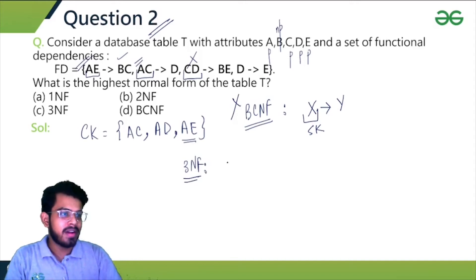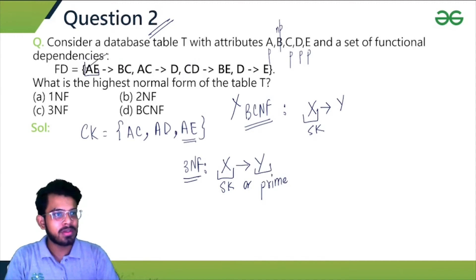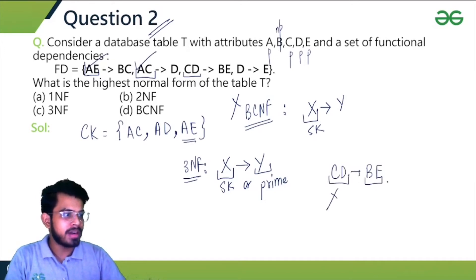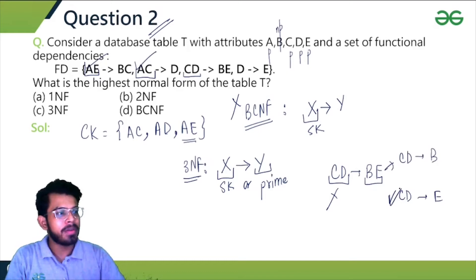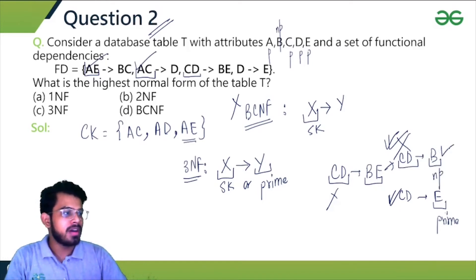What about 3NF? For 3NF, for every non-trivial functional dependency X to Y, either X is a super key or Y is prime. A is a super key — okay. AC is a super key — okay. For CD→BE: CD is not a super key. Decomposing: CD→B and CD→E. For CD→E: E is a prime attribute, so this satisfies 3NF. But for CD→B: B is a non-prime attribute and CD is not a super key, so this doesn't satisfy BCNF.